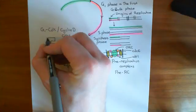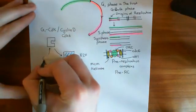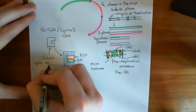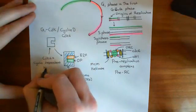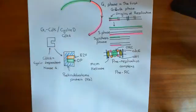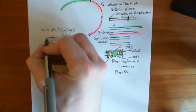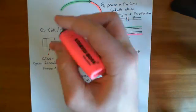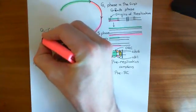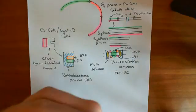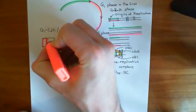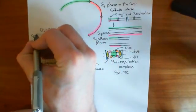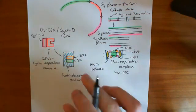This complex consists of the cyclin-dependent kinase 4, which is the CDK4 enzyme. CDK4, which stands for cyclin-dependent kinase 4, is not active on its own. Instead, it needs a cyclin bound to it, and in this case it's got cyclin D bound to it. When cyclin D binds to CDK4, it forms this active cyclin D-CDK4 complex, also known as the G1 CDK, which is going to phosphorylate the retinoblastoma protein.